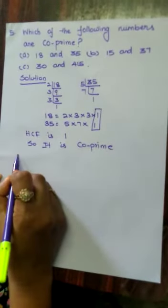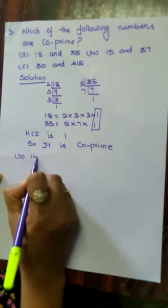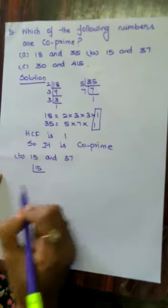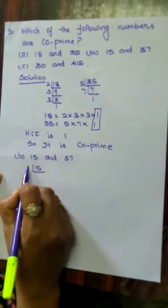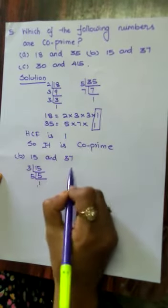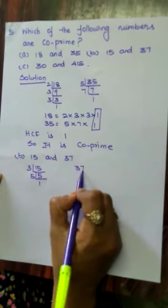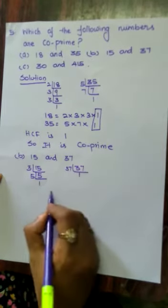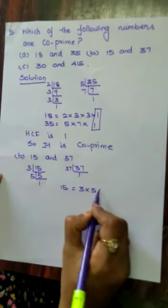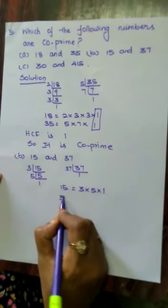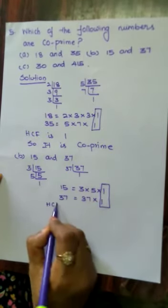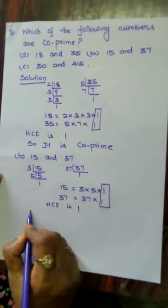Next subdivision: 15 and 37. 15 = 3 × 5 × 1. 37 = 37 × 1. The highest common factor is again 1, so 15 and 37 are co-prime.